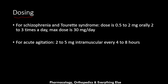Regarding dosing, for schizophrenia and Tourette's syndrome the dose is about 0.5 to 2 milligrams orally two to three times a day, with a maximum dose of 30 milligrams per day. For acute agitation, it is administered as a 2 to 5 milligrams intramuscular dose every four to eight hours.